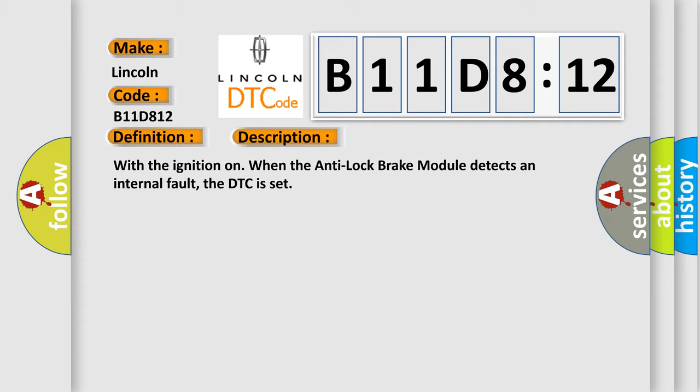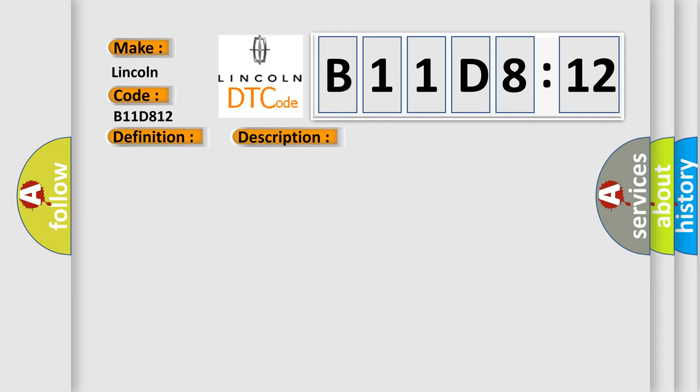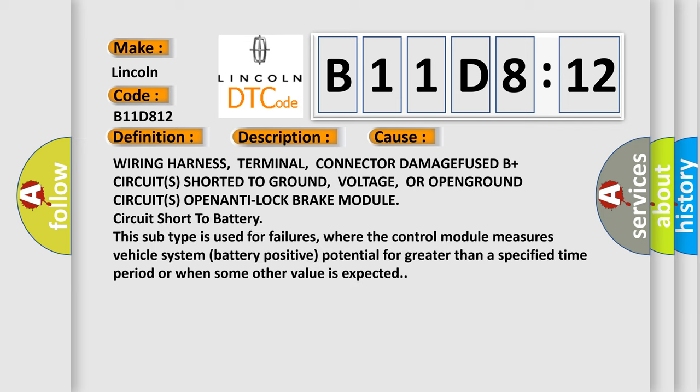This diagnostic error occurs most often in these cases: wiring harness, terminal, connector damage, fused B-plus circuit shorted to ground, voltage or open, ground circuits open, anti-lock brake module circuit short to battery. This subtype is used for failures where the control module measures vehicle system battery positive potential for greater than a specified time period or when some other value is expected.